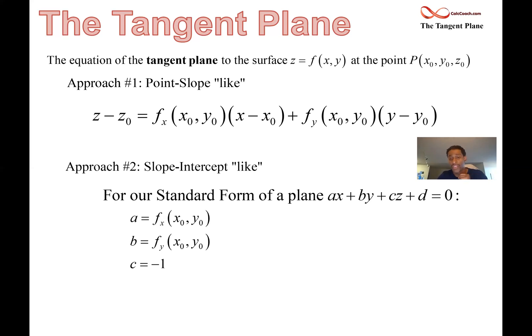If you look above there, the coefficient on x is the partial with respect to x and the coefficient on y is the partial with respect to y. When it comes to the coefficient on z, you're going to have to set it equal to zero by subtracting it over. So c is negative one.